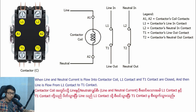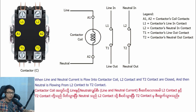When line and neutral current flow into the coil at E1 and E2, L1 and T1 contacts are closed, and then line flows from L1 to T1 contact. When line and neutral current flow into the coil, L2 and T2 contacts are closed, and then neutral flows from L2 contact to T2 contact.